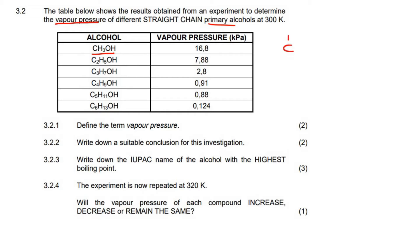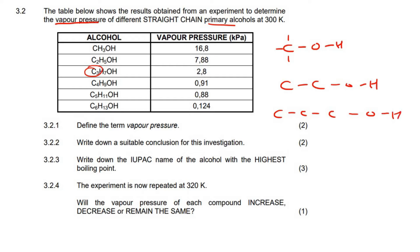So here we've got a one carbon alcohol — three hydrogens with an OH on it. Then here we've got a two carbon alcohol, then an OH and a whole bunch of hydrogens. Here we've got three carbons with OH, and then you get the idea: four carbons, five carbons, six carbons. Then they've given us the different vapor pressures — we'll definitely have to talk about all of that as we go along.